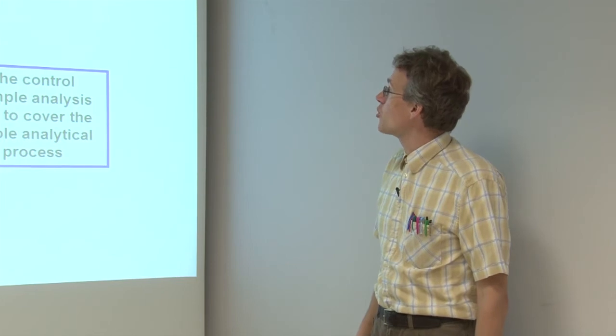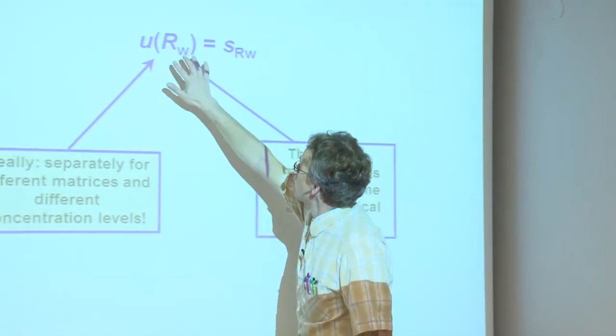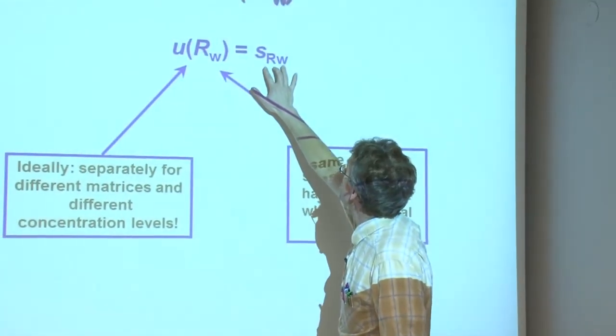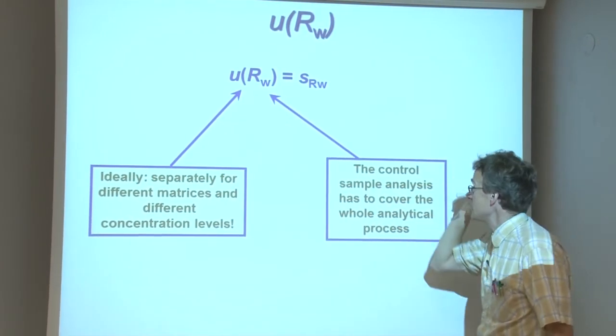So, let us summarize. URW is found as the long-term within-laboratory standard deviation.